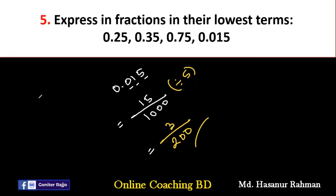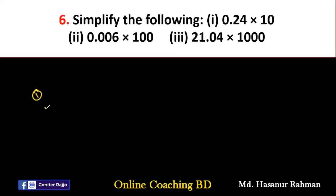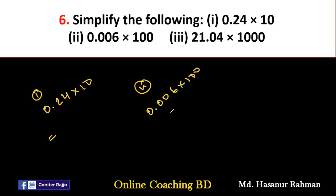Now, number six says: simplify the following. Number one is 0.24 multiplied by 10; number two is 0.006 multiplied by 100; and number three is 21.04 multiplied by 1000. When we multiply any decimal number by 10, we move the decimal point one digit to the right.